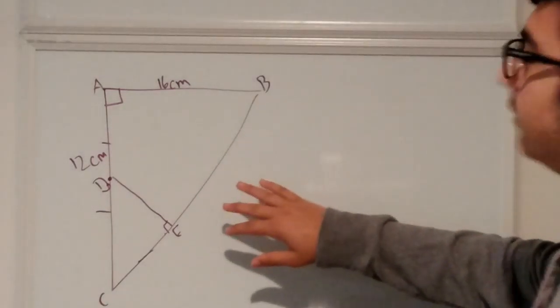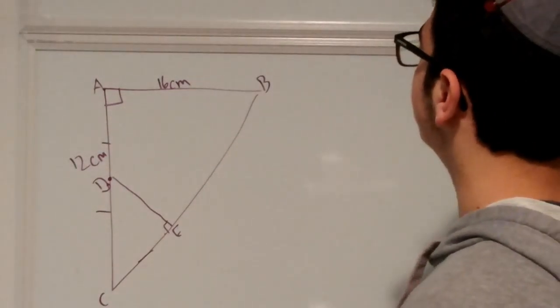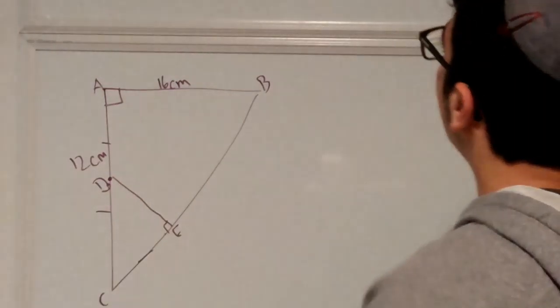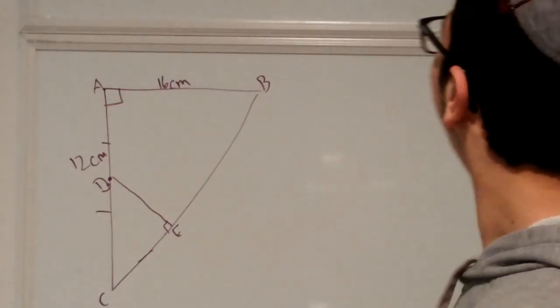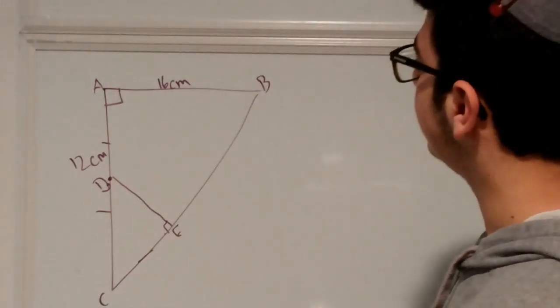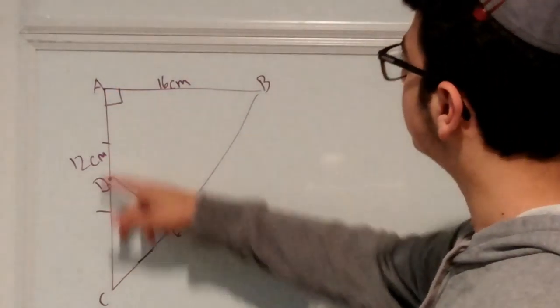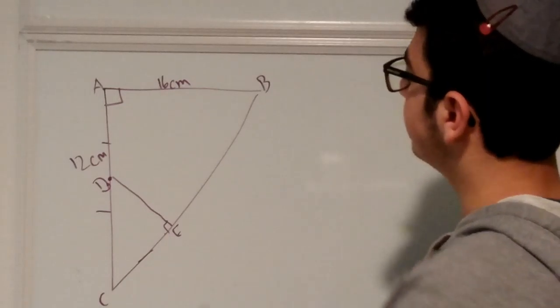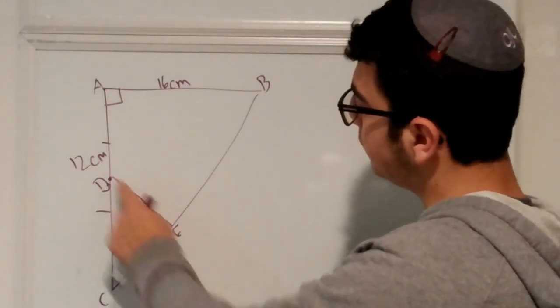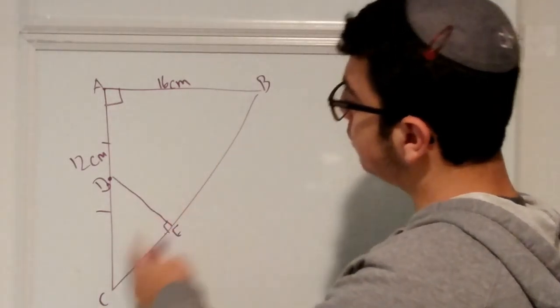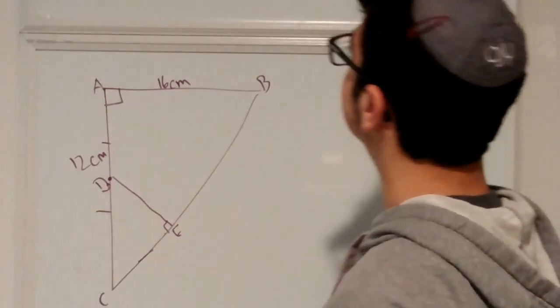So in this problem, we have triangle ABC, which is a right triangle, and angle A is equal to 90. AB is equal to 16, AC is equal to 12 centimeters. D is the midpoint of these two, and E is formed so that it creates a perpendicular line between CB and DE.